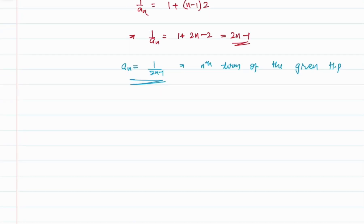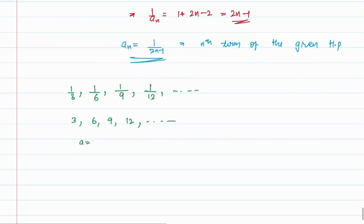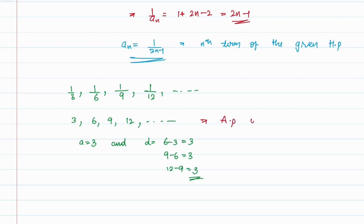Let's take one more example: 1/3, 1/6, 1/9, 1/12, and so on. When we take the sequence of reciprocals, we get 3, 6, 9, 12, and so on. Here the first term is 3 and the common difference is 6 − 3 = 3, and 9 − 6 = 3, and 12 − 9 = 3. Since the difference between consecutive terms is always 3, this is an arithmetic progression with common difference d = 3.